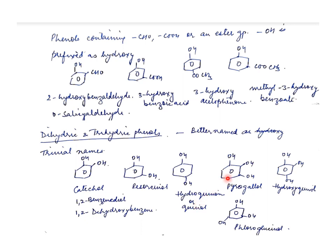For trihydric phenols, if OH groups are at the 1,2,3 positions, we can say 1,2,3-trihydroxybenzene.